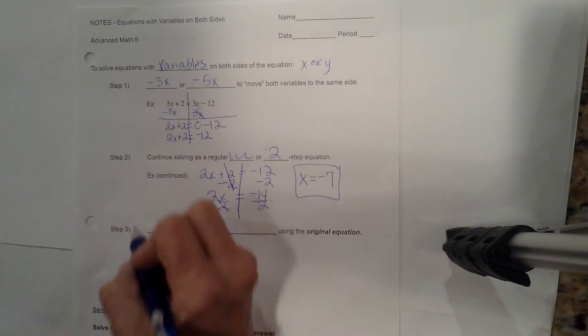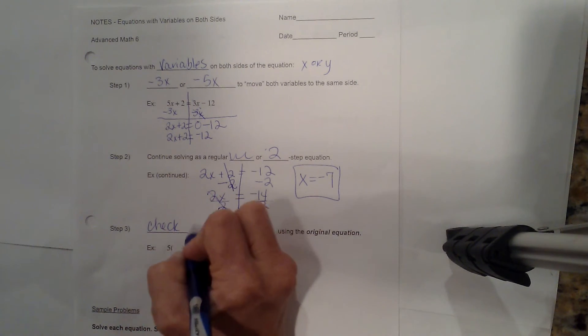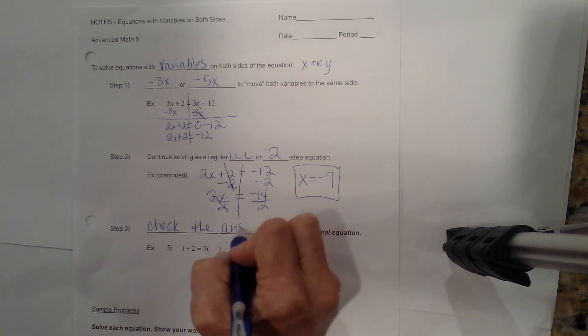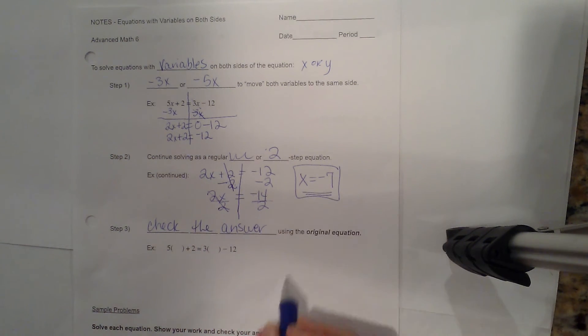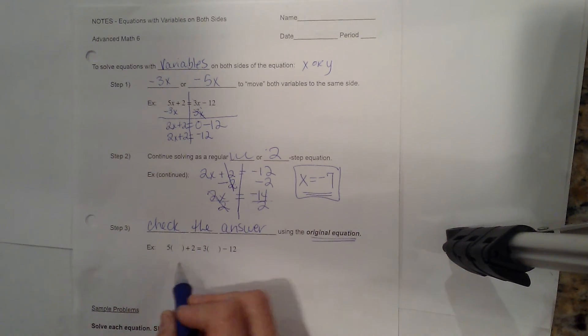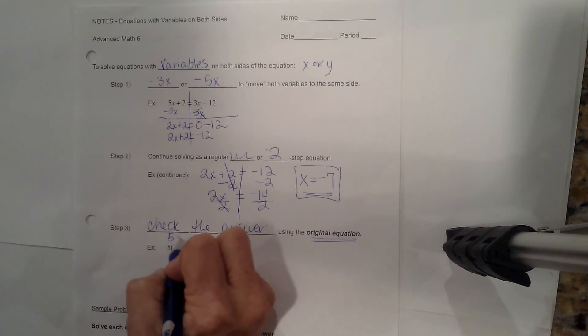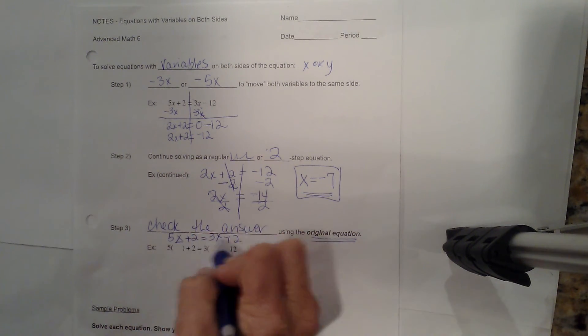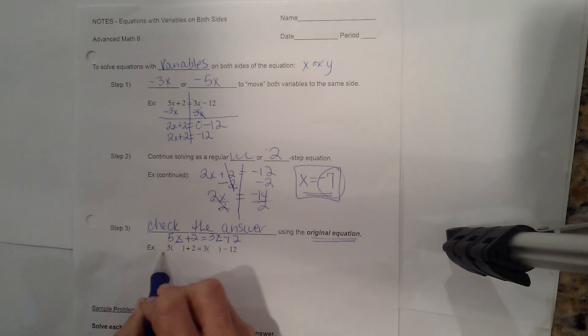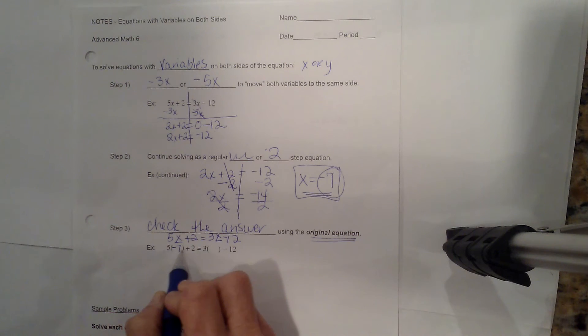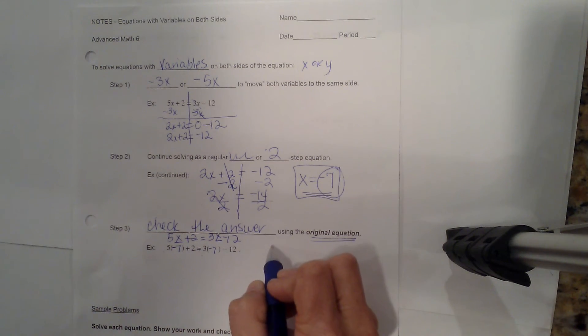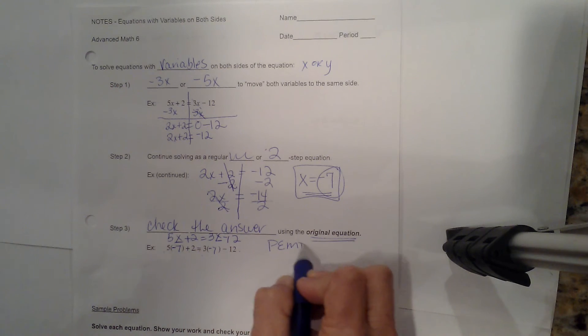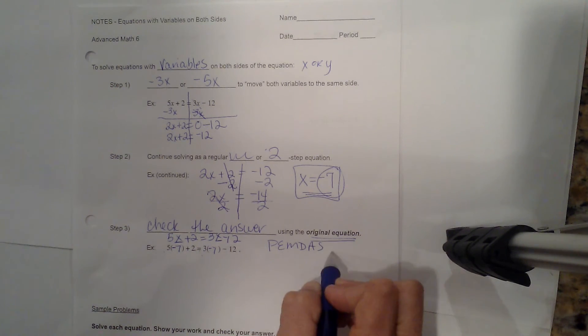Now what I want to do is I want to check the answer. I want to go back and check and make sure it works in the original equation. So my original equation is 5x plus 2 is equal to 3x minus 12. So everywhere there's an x, I'm going to plug in this negative 7. So I've got 5 times negative 7 plus 2 equals 3 times negative 7 minus 12. Now if you remember, please excuse my dear Aunt Sally, that's PEMDAS, the order of operations.